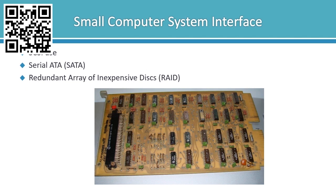In RAID 0, you have two or more hard drives that are bound together in a single virtual disk volume. In RAID 1, you have a mirrored volume disk where every mirror of every disk has an input and output operation on the primary disk and then to a separate disk called a mirror disk. In RAID 5, you blend the benefits of RAID 0 and the redundancy of RAID 1.